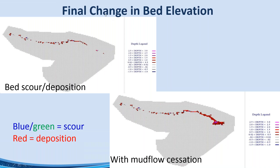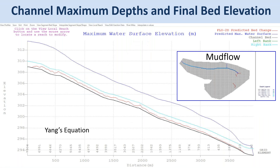You can also examine the final change in bed elevation, showing bed scour and deposition combined with mudflow cessation. In a channel, you might see that the mudflow scoured the channel to bedrock just downstream of the dam. Results include bank elevation, maximum water surface elevation (whether mudflow or fluid phase, whichever was highest), and the change in bed elevation — showing sediment deposition that gradually decreases in the downstream direction.